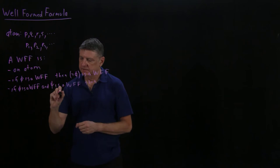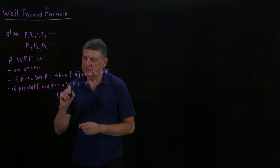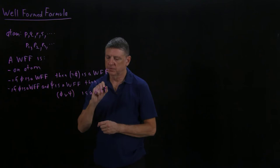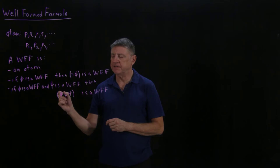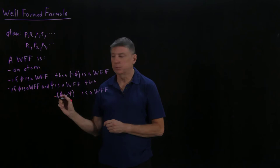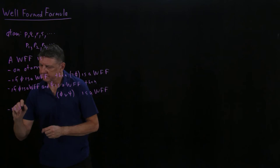Then we will say that phi disjunction psi is a well-formed formula. We'll sometimes read this out as though it's phi or psi. Strictly speaking, we will say the disjunction of phi and psi. And let's observe that for a well-formed formula, we have to include parentheses.